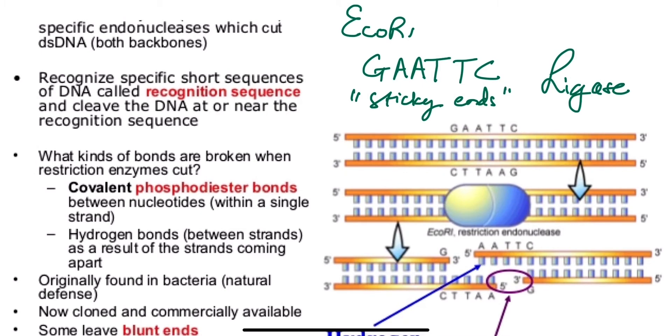So just to also clarify something here, the bonds that are broken when these restriction enzymes like EcoR1 cut are the covalent phosphodiester bonds within the backbone and also the hydrogen bonds that are here in between the strands, between the individual nucleotides, the A's, the T's, the C's, and the G's.